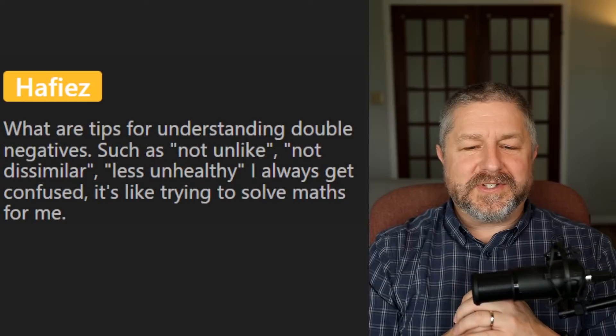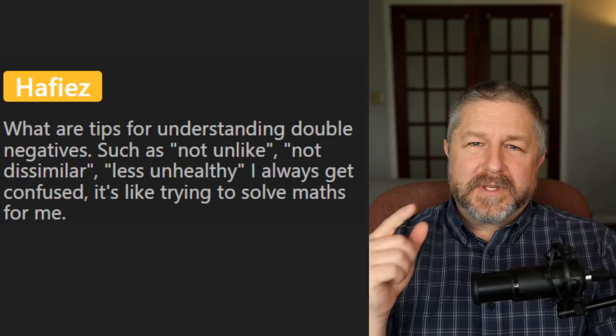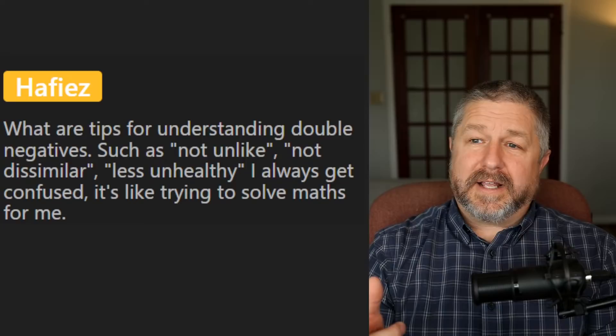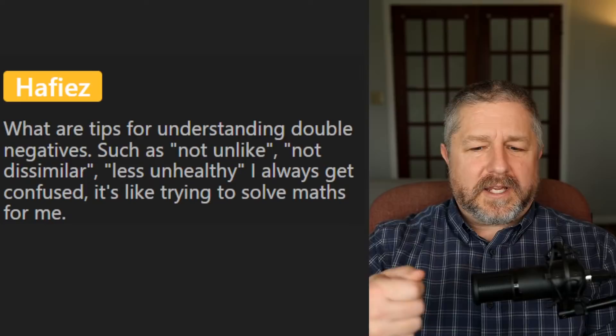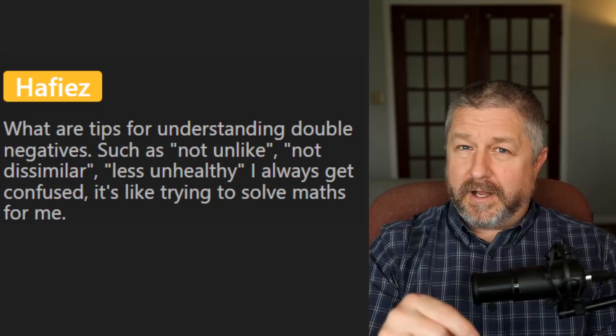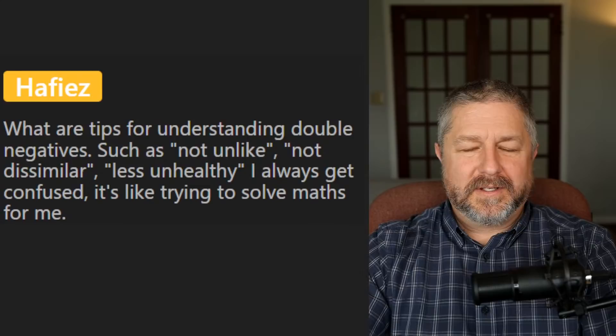From Hafiez: tips for understanding double negatives such as 'not unlike,' 'not dissimilar,' 'less unhealthy.' Just ignore the 'not' and 'un' parts. So if someone says 'that's not unlike all the cars in Canada,' remove the 'not' and 'un' and you get 'that's like all the cars in Canada.' Not dissimilar means similar. Less unhealthy — apples are less unhealthy — you could just say they are healthier. It's like solving a math problem: remove the double negative to get the plain meaning.